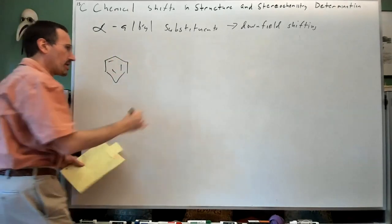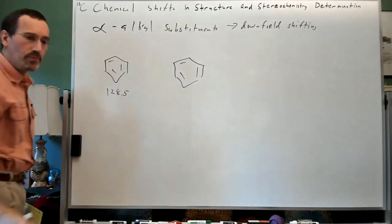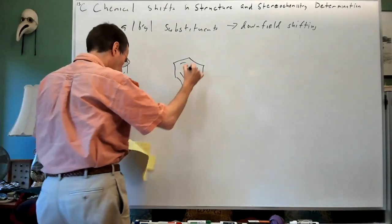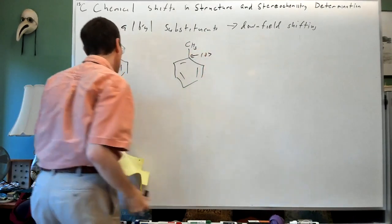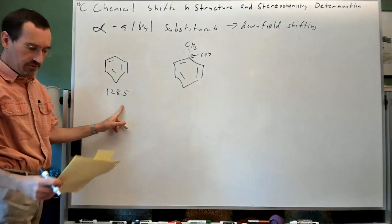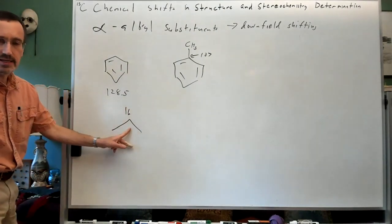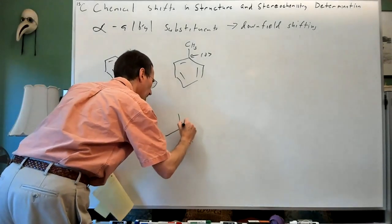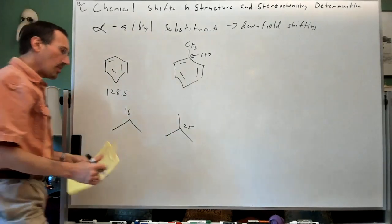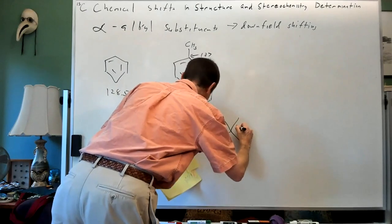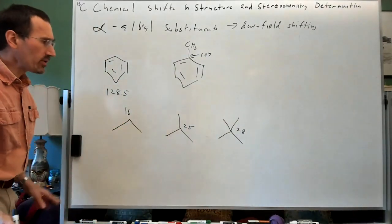Starting with benzene as a baseline at 128.5 ppm: if we put a methyl group on it, we're now at 137 ppm — about 8 or 9 ppm extra downfield shifting. Looking at an alkane series: propane has a methylene at 16 ppm; add a methyl group to get butane and it goes to 25 ppm — again about 9 ppm downfield. Add another methyl group to get neopentane, and now we're at 28 ppm. We keep moving downfield.